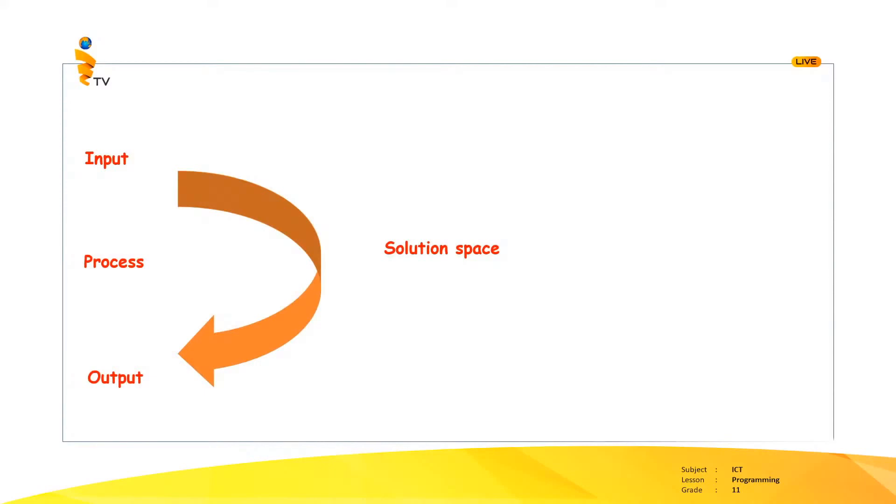My recipe is different to your recipe, but at the end, I also get a sandwich and you also get a sandwich. So we can define our solution space — that is, we are going to prepare a sandwich. You may use a different method and I can use a different method. All the solutions we use to get our output is called the solution space. Remember, the end result is the same. If I have prepared my vegetables previously, I will get a sandwich much faster.